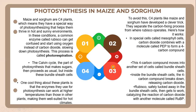Let's look into the process of photosynthesis in maize and sorghum. Maize and sorghum are C4 plants, meaning they have a special way of photosynthesizing which helps them thrive in hot and sunny environments. In these conditions, a common enzyme called RuBisCO can get confused and start using oxygen instead of carbon dioxide, which slows down photosynthesis — a process called photorespiration. To avoid this, C4 plants like maize and sorghum have developed a clever trick: they separate the carbon-fixing process from where RuBisCO operates.